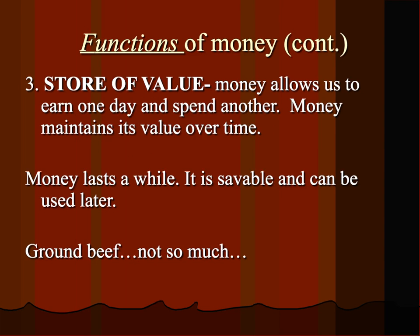And lastly, the third function of money is the store of value. Money allows us to earn it one day and spend it another, so it maintains its value over time. Money lasts a while — it's savable, it can be used later. If you put it through the washing machine, no big deal; it's still going to come out the other side. Throw it under your mattress, forget about it, 50 years later you come back — it may not buy the same amount of stuff, but it hasn't gone bad. Using ground beef, on the other hand, not so much. Don't put ground beef under your mattress and wait 20 years — it's not going to turn out well.